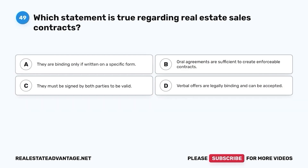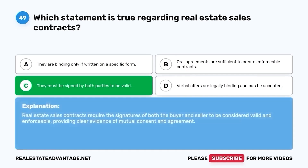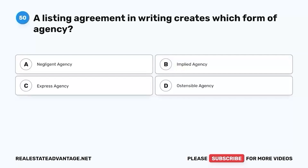Question 49. Which statement is true regarding real estate sales contracts? A. They are binding only if written on a specific form. B. Oral agreements are sufficient to create enforceable contracts. C. They must be signed by both parties to be valid. D. Verbal offers are legally binding and can be accepted. The correct answer is C. Real estate sales contracts require the signatures of both the buyer and seller to be considered valid and enforceable, providing clear evidence of mutual consent and agreement.